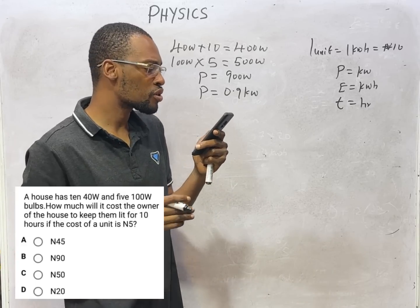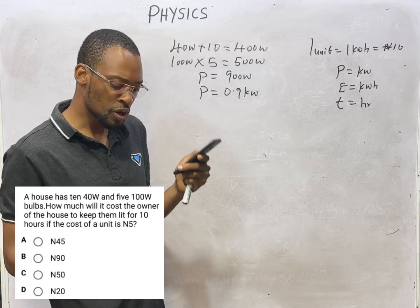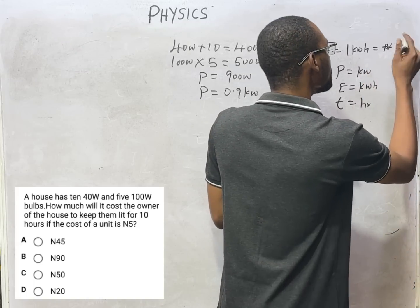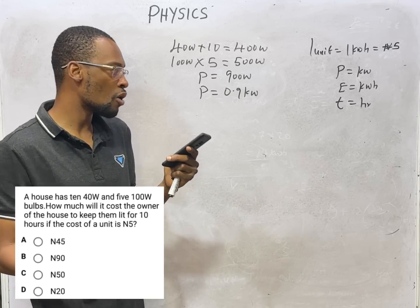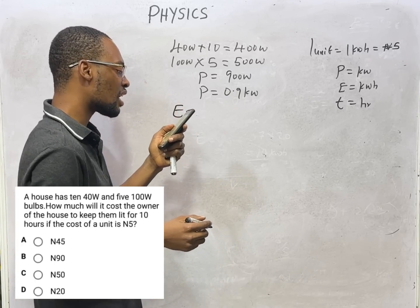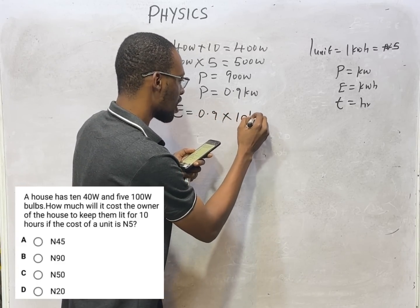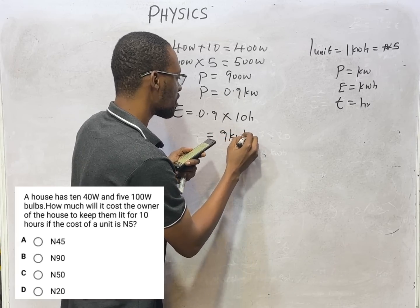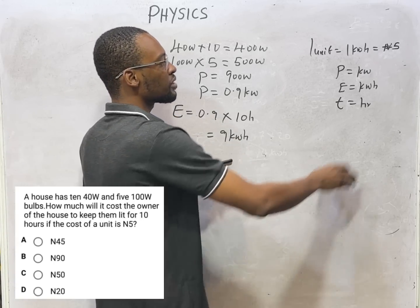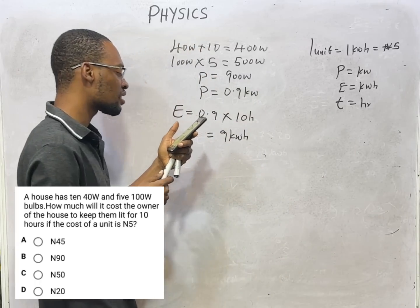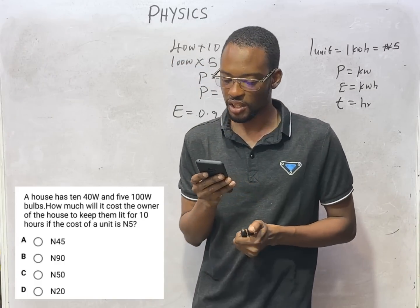They said: how much will it cost the owner of the house to keep them lit for 10 hours, if the cost of a unit is 5 Naira? The energy needed for 10 hours is power 0.9 times time 10 hours, which gives you 9 kilowatt hours. If we multiply this energy by 5 Naira per unit, that is 9 times 5 = 45 Naira. That is the cost the person will need to manage this electricity.